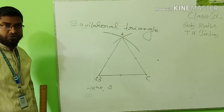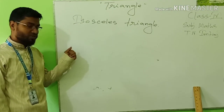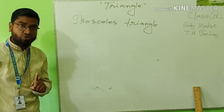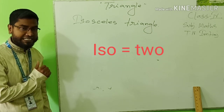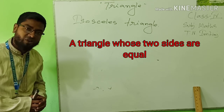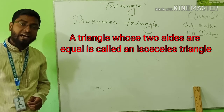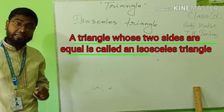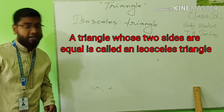Have you understood? Now, isosceles triangle. The prefix 'iso' means two. So the definition will be very easy: a triangle whose two sides are equal is called an isosceles triangle. Again repeating: a triangle whose two sides are equal is called an isosceles triangle.